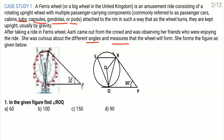She forms the figure as given below. This is the ferris wheel, and at this place her friends are sitting. This is the center of the wheel, and Aarti is standing at this place, from where she is observing her friends. According to this, we have made this figure. Now let us see which questions they have asked us.